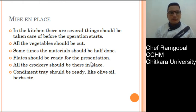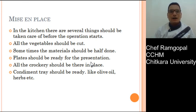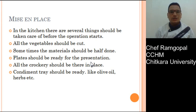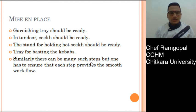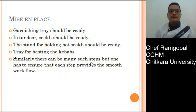There are several such things a chef needs to take care of before the operation starts. All vegetables should be cut, and some items should be half-done or partially cooked so that at operation time you simply reheat, add a final touch, garnish, and display for the guest. Plates should be ready for presentation, all crockery in proper order, and a condiment tray with olive oil or herbs should be ready. Garnishing is a very important factor — without garnishing you would generally never serve a dish, as it gives appeal to the dish.